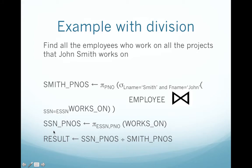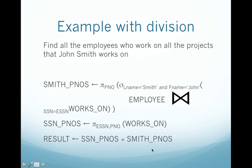In the second part, we take works on and project ESSN and the project numbers into SSN and PN. This gives us the project numbers of everyone that works on a project. At the end, we have the SSN and project numbers for people that work on all projects, and then we divide it by the project numbers — the projects that John Smith works on.